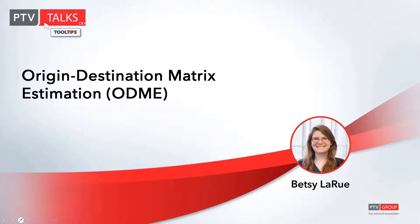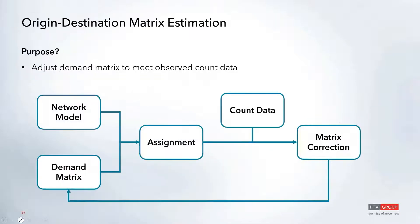Our second topic today is origin destination matrix estimation, which I'll be referring to as ODME. Today we're going to talk about how to get this set up, how to add in all your count information, and then how to run through this procedure. ODME is used when you have a demand matrix that is outdated and you have more recent count data, either for turning movements or on links.